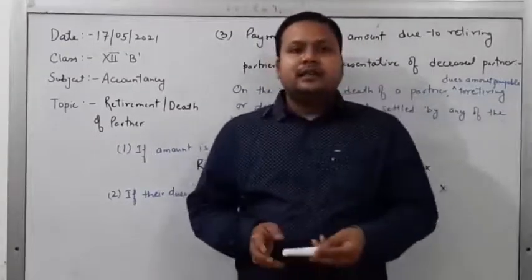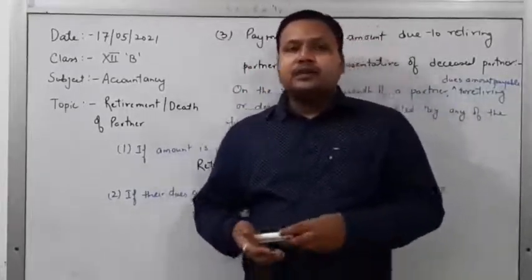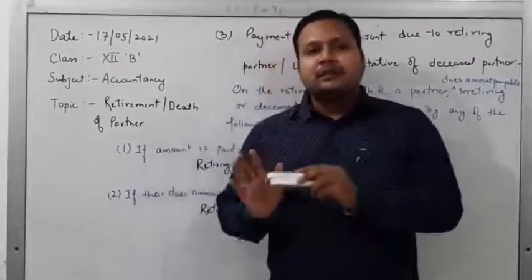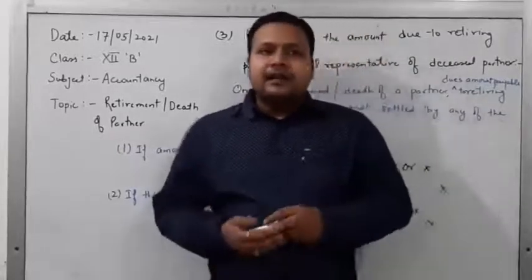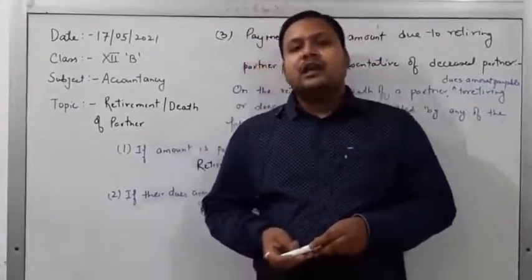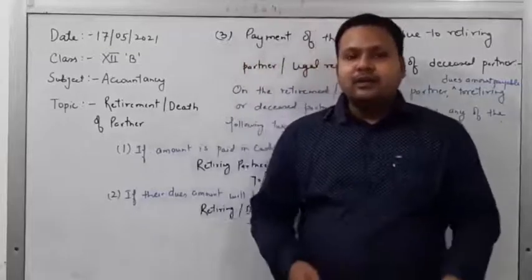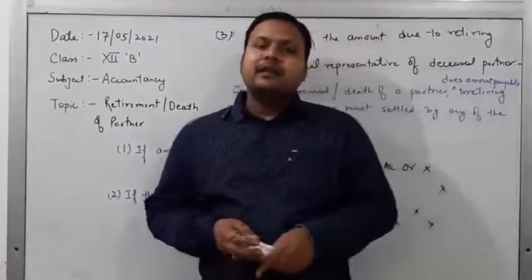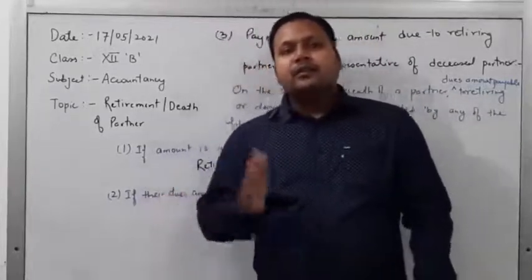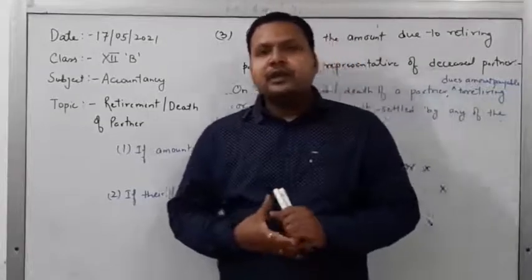When any partner retires or dies, we revalue the assets and liabilities. If there is any profit or loss, we distribute it among all partners in their old ratio - just like Chapter 3. The journal entries and revaluation account are prepared the same way as Chapter 3. Second adjustment: accounting treatment of reserves - general reserve, specific reserve, accumulated profit, accumulated losses, and deferred revenue expenditure. This adjustment is also done just like Chapter 3 and Chapter 4. Whatever general reserve or specific reserve exists, it must be distributed by all partners in their old ratio. New partners will not get any distribution of these reserves.